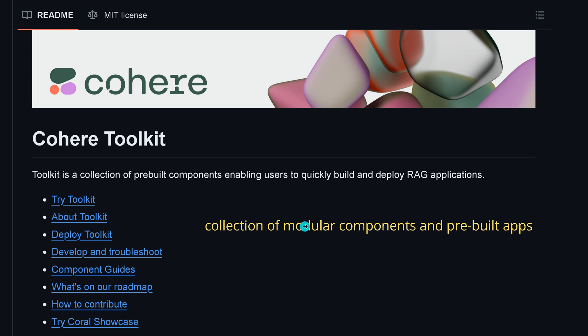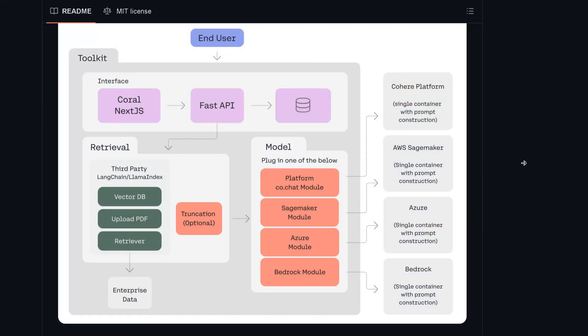We now have a collection of modular components and pre-built apps on the Cohere platform. If you open up the files and look at how the best experts in the field write code, you can take a sneak preview and learn from it. Whatever you need — your vector database, how you upload PDFs, retriever, re-ranking — whether you choose the Cohere platform, AWS SageMaker, Azure, or Bedrock, they have done it all for you. This is a complete ready-to-use toolset to build your perfect RAG system for your company, private data, or whatever you want to build.